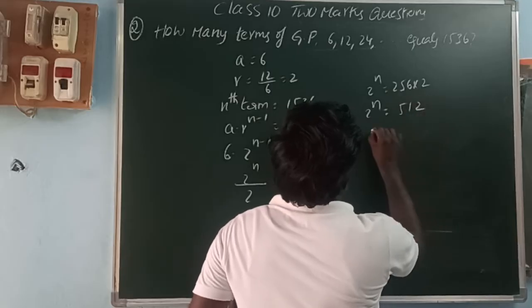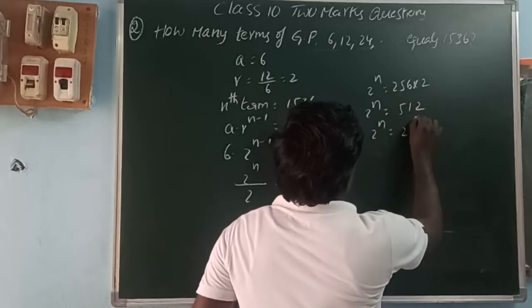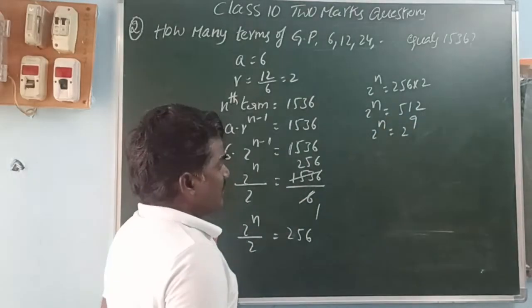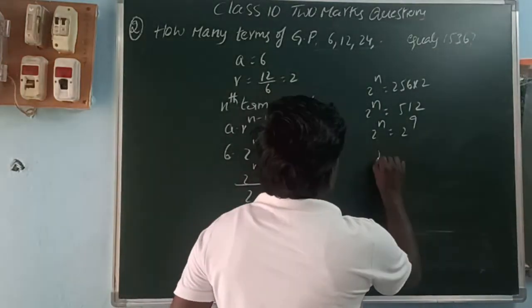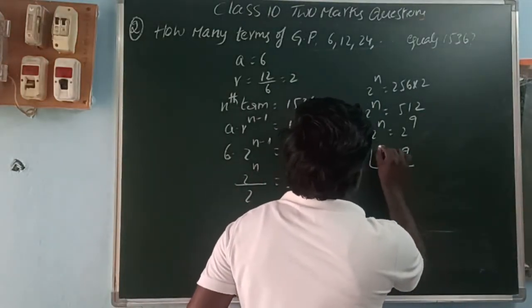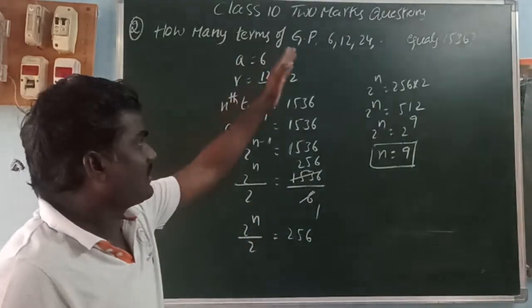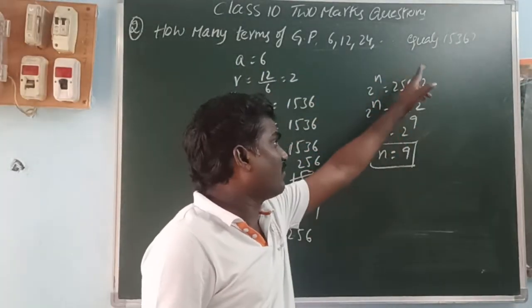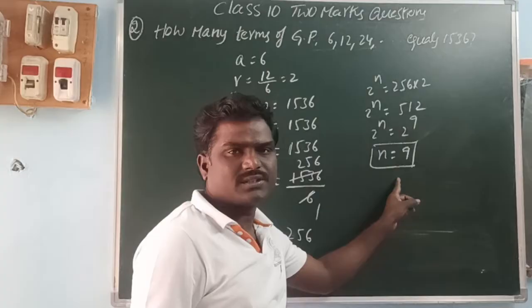Therefore 2^(n-1) = 256, which gives n-1 = 8, so n = 9. The answer is the 9th term.